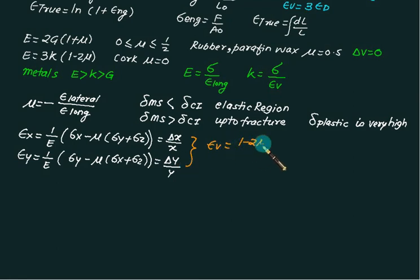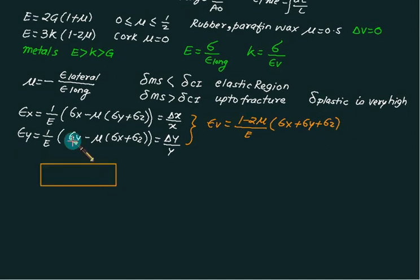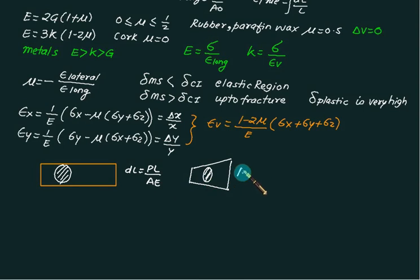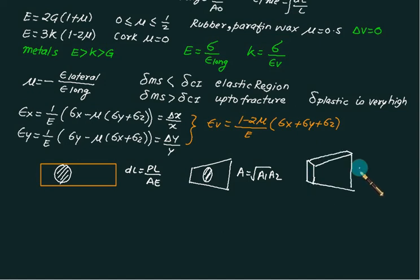Volumetric strain equals (1 − 2μ)/E × (sigma_x + sigma_y + sigma_z). For a prismatic bar of uniform cross-section, δL = PL/(AE). If the cross-section is circular and tapered, use A = √(A₁·A₂) and the same formula PL/(AE). For a rectangular section that is tapered, use A = (A₁ − A₂)/ln(A₁/A₂) and substitute into PL/(AE); remember thickness is constant here.